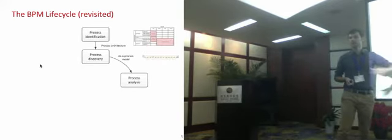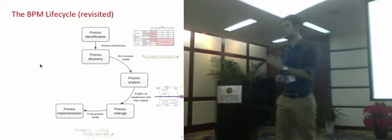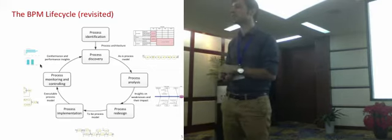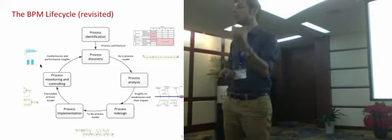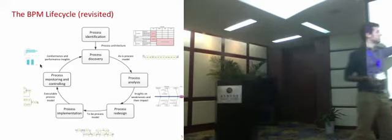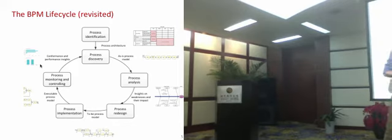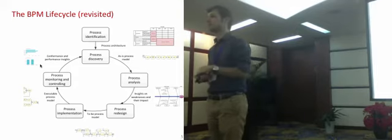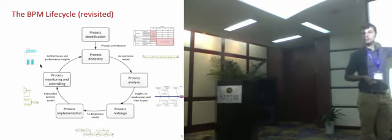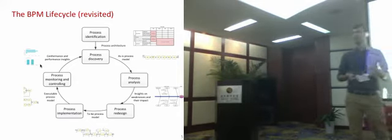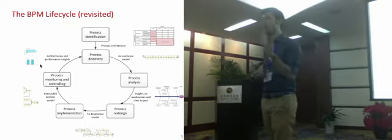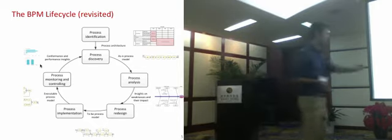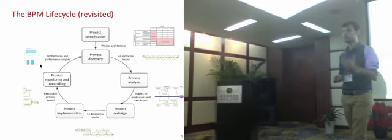We start with process identification, where we identify the business processes that fulfill our improvement requirements. The result is a process architecture where we organize business processes hierarchically and define order dependencies between them. Once this phase is concluded, we kick off the discovery phase, where we properly document business processes as conceptual process models — the result being an as-is process model. Discovery can be done by interviews, workshops, inferring information from documents, or through automated process discovery via process mining techniques.